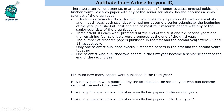Hello everyone, welcome to Aptitude Jab. This is a data caselet. It says that there were 10 junior scientists in an organization. If a junior scientist finished publishing his or her fourth research paper with any of the senior scientists, he or she becomes a senior scientist. It took three years for these 10 junior scientists to get promoted. In each year, each scientist who had not become a senior scientist published at least one and at most four research papers. Scientists can publish one, two, three, or four papers in a year.